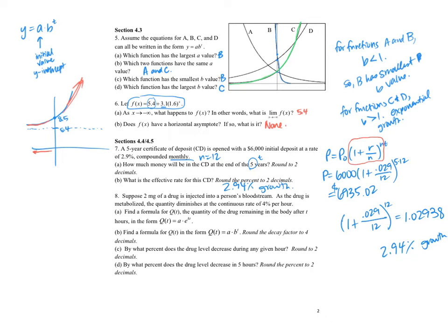Number 8, suppose that 2 milligrams of drug is injected into the bloodstream. It diminishes at 4% per hour. So I can find my formula. The 2 is that initial value, that's my A. And diminishes at 4% per hour, that's my k. So my formula is Q(t) equals 2e to the negative 0.04t.